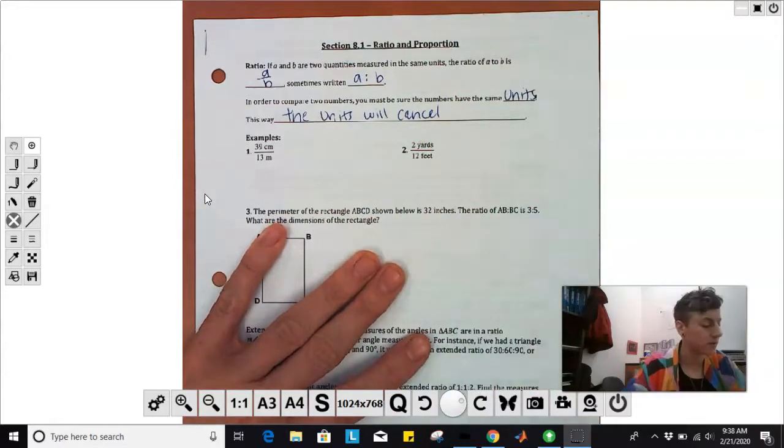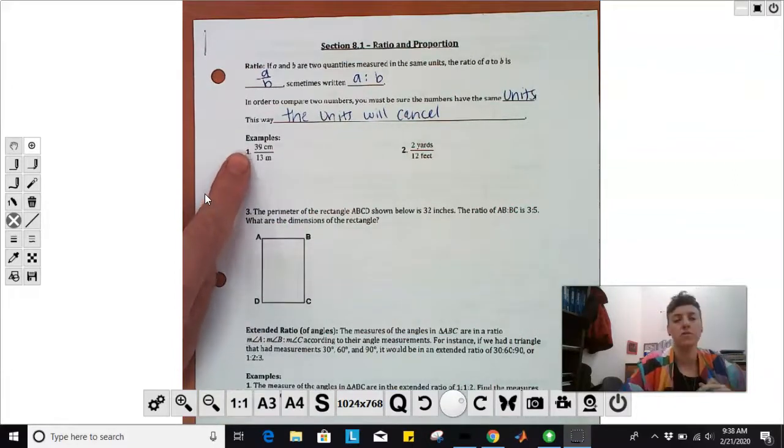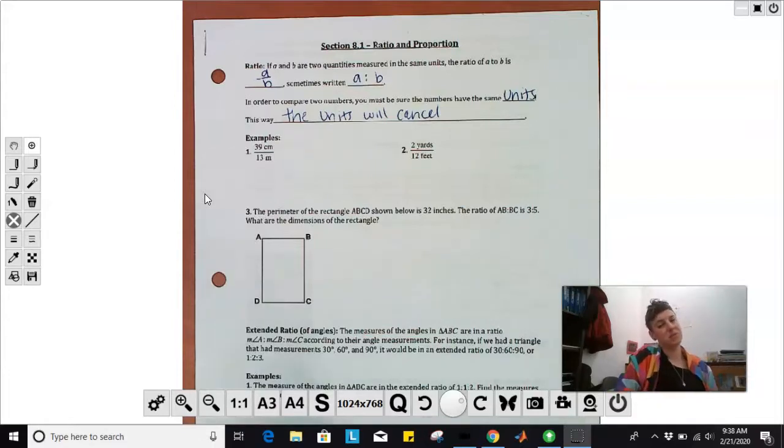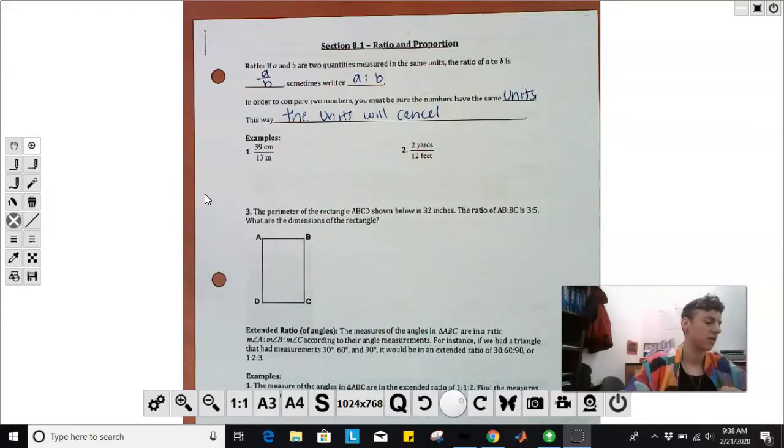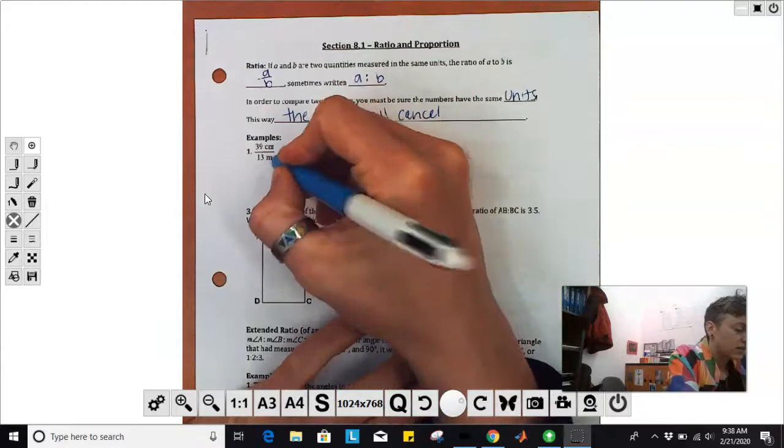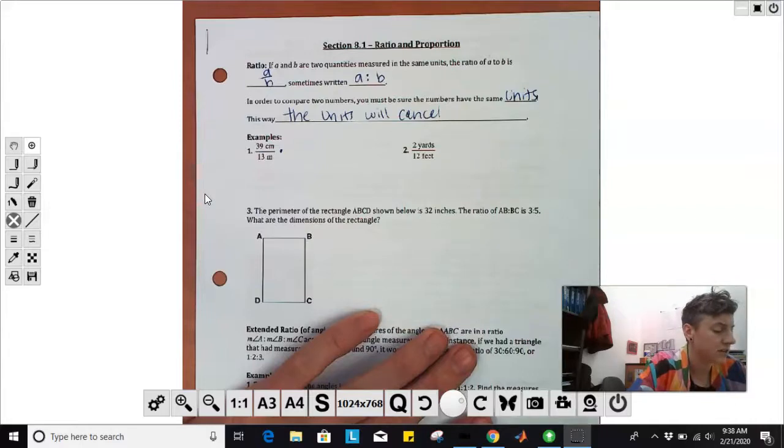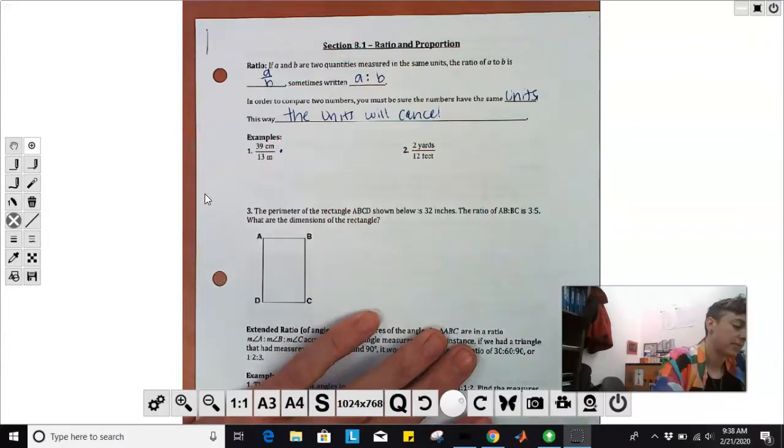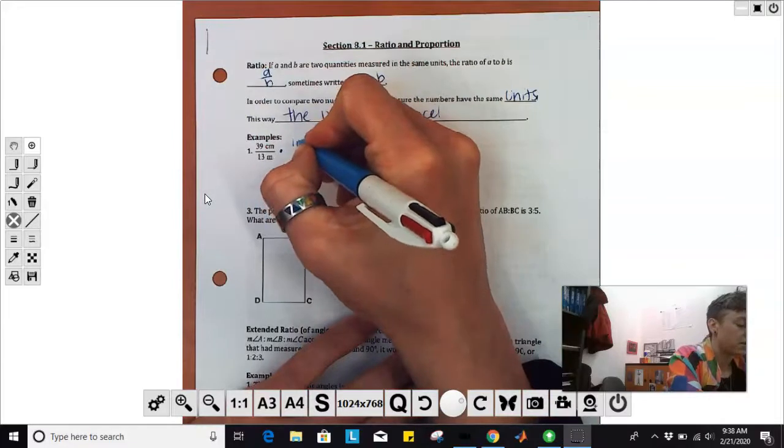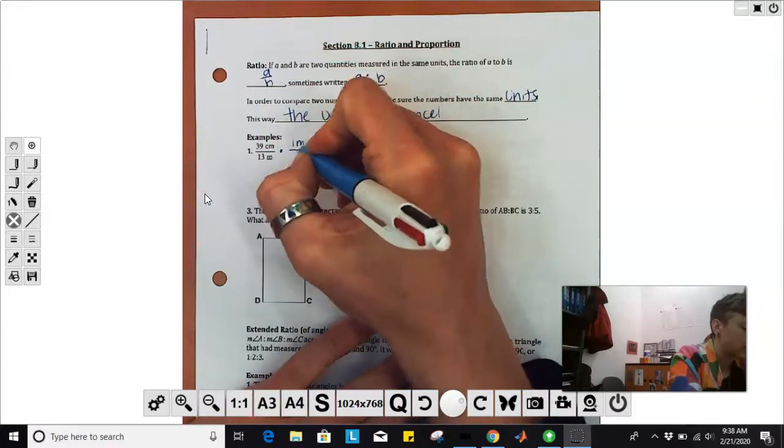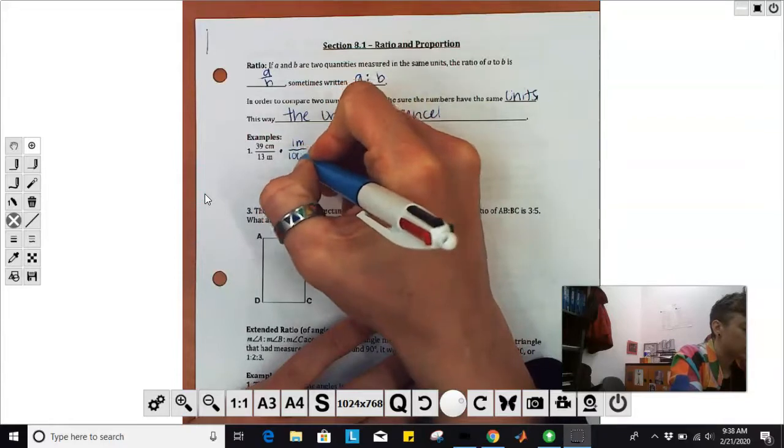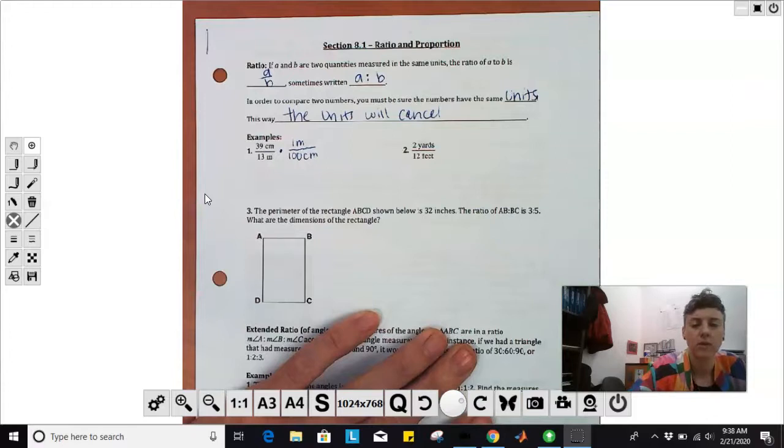For example, we've got a ratio of 39 centimeters over 13 meters. Does that have the same units? Nope! So we've got to use our stoichiometry to get our units converted. We've got centimeters and meters. We could go either way, convert centimeters to meters or meters to centimeters. I'm going to convert the meters to centimeters so that we don't have any decimals. We know that one meter is 100 centimeters. We're multiplying here.